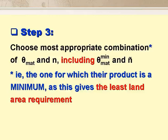In step 3, we choose the most appropriate combination of N and theta M, including N year in theta M min. This is the combination for which their product, that is to say, N times theta M, is a minimum, as this gives us the smallest land area requirement.